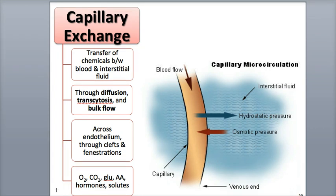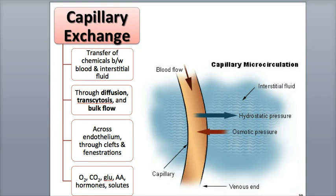Chemicals found in higher concentrations in the blood, like oxygen and nutrients, diffuse down their concentration gradients from higher to lower concentration, leave the blood, enter the interstitial fluid, and then move into the body's tissue cells. The tissue cells contain higher concentrations of carbon dioxide and wastes, which are released into the interstitial fluid, and then diffuse into the blood, where they're found in lower concentrations.